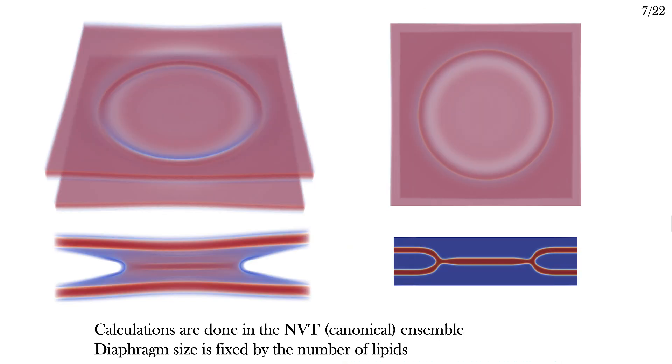There are different ways that I can simulate the hemifusion diaphragm. For example, if I use the canonical ensemble, or the NVT ensemble, this fixes the number of lipids essentially fixing the membrane area. There's some compressibility, but it's basically fixed.